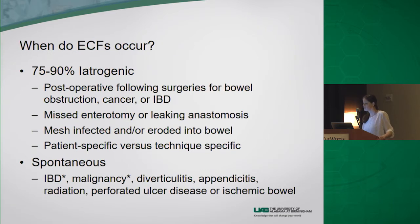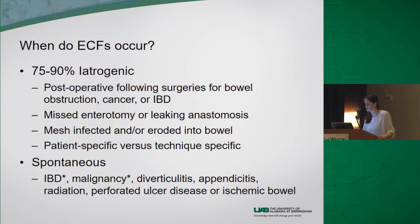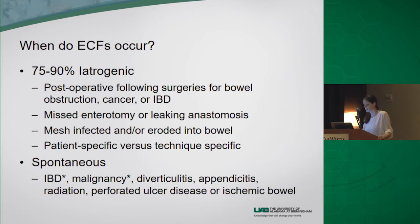Fistulas are mainly iatrogenic about 75 to 90 percent of the time. They usually follow operations, especially for bowel obstructions, cancer, or inflammatory bowel disease. Usually there's a missed enterotomy or a leaking anastomosis. They can also occur in the setting of infected mesh, either when the bowel has eroded into the mesh. There are also patient-specific factors as well as technical factors.